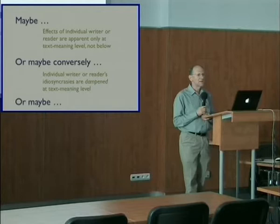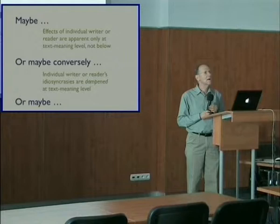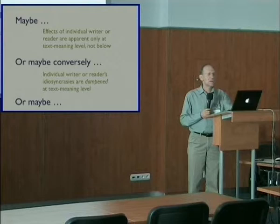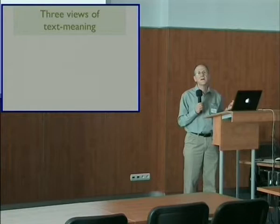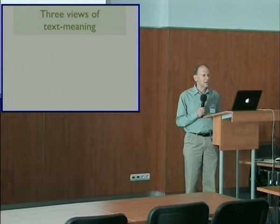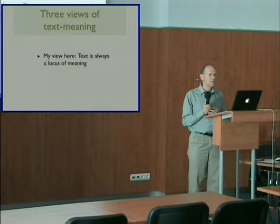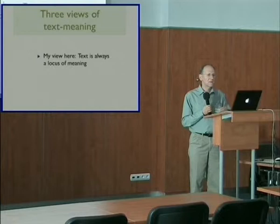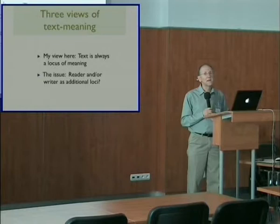I don't want to follow this direction further here — I just want to point out that many different answers are possible, and that the nature of the relationship between the locus of text-meaning and the locus of meaning at lower levels doesn't follow immediately from choosing one or the other. My goal in this talk is not to argue for one of these three views over the others — I'll leave that to the philosophers and literary theorists. Instead, what I want to do is regard each one of them as a view that can be helpful in computational linguistics and natural language processing. Nonetheless, I'll be taking the view that text is always a locus of meaning for anything we do in computational linguistics, and the issues will be whether we should regard the reader or the writer as additional loci of text-meaning, or maybe both.